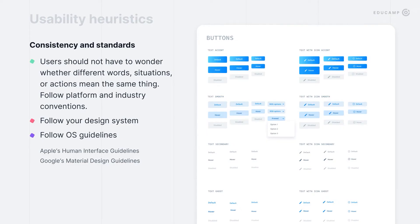The next usability heuristic: consistency and standards. Users don't have to wonder whether different words, situations, or actions mean the same thing. Follow platform and industry conventions. Be consistent in your design — your UI should follow the design system. Also, if you design for iOS or Android, follow their design guidelines.